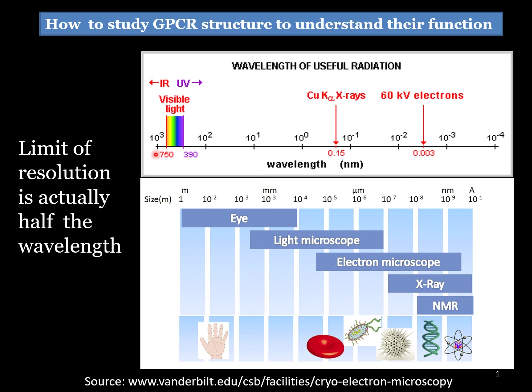As you know, the resolution of a microscope is defined as the shortest distance between two points on a specimen that can still be distinguished by the observer or camera system as separate entities. Thus, using a 100X objective in an optical microscope, you can have a resolution of 0.2 micrometer — you can see cellular structures in detail, but you will not be able to see the ultra-structure, the very fine details of subcellular particles or organelles.